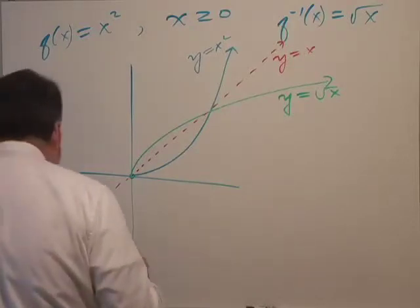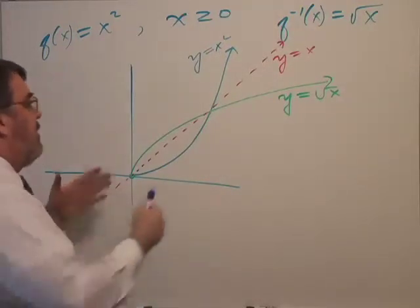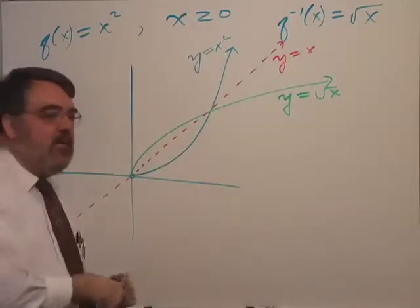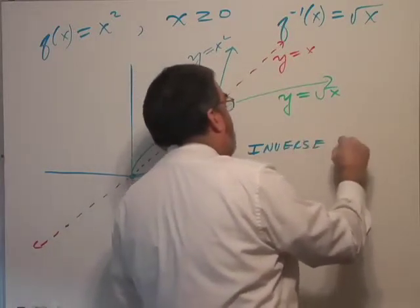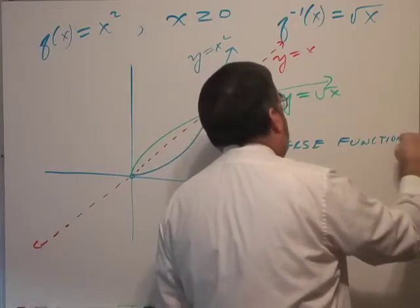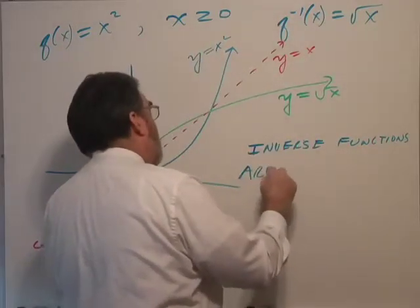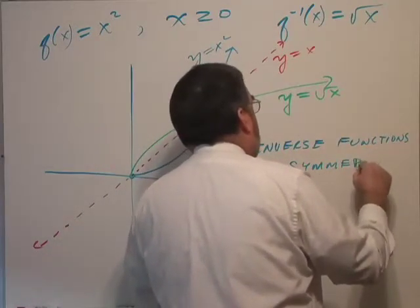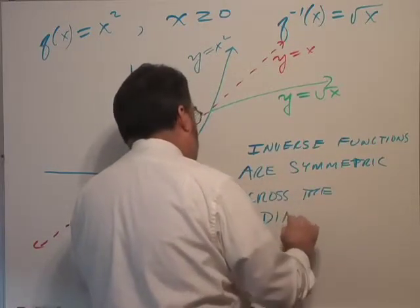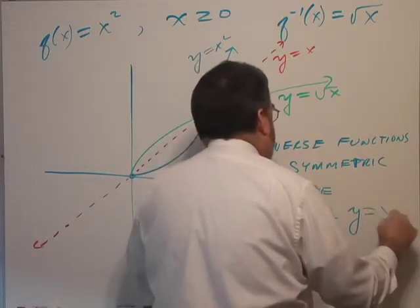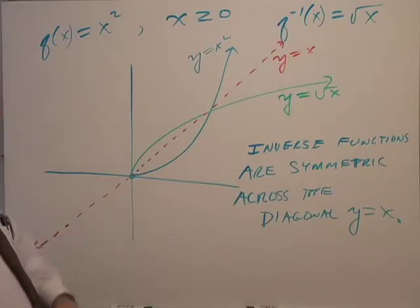That ends up, I think that's kind of interesting. I'm going to leave it without attempting to really justify it, but you could think about justifying it in terms of how you create an inverse function. You're sort of reversing the variables. Anyway, let me just write as a statement. Inverse functions are symmetric across the diagonal y equals x. Given to you without proof. It's not that hard to prove, but I think I'll leave it at that.